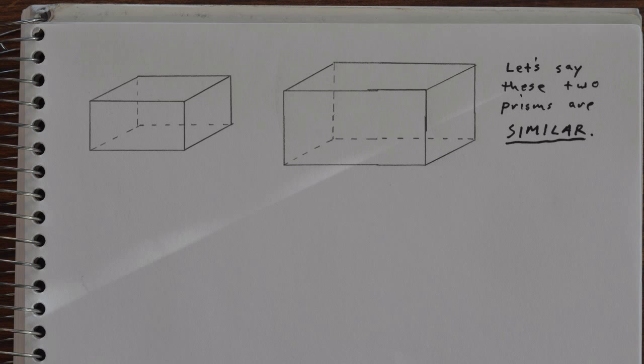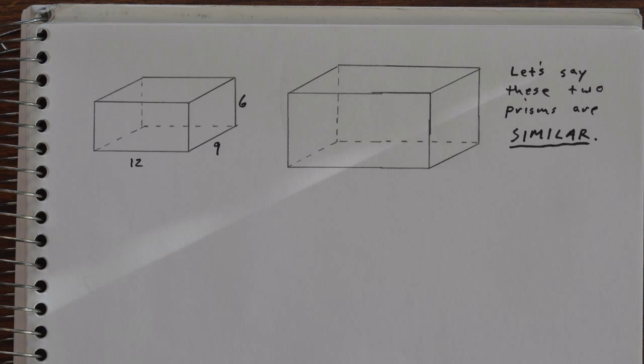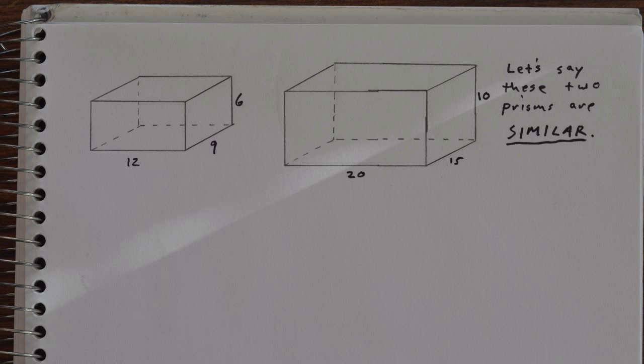Let's look at an example. Let's say we have these two similar prisms, and the smaller of the two has measurements of 12 by 9 by 6. The larger, let's say, is 20 by 15 by 10.